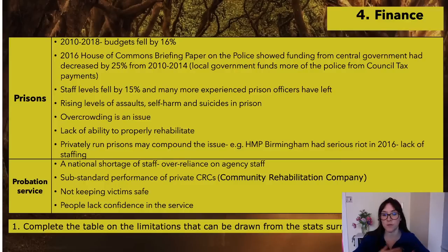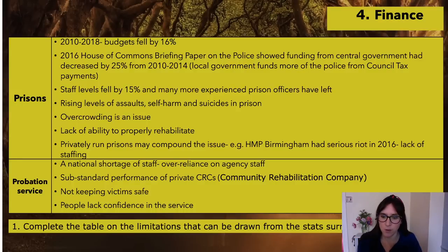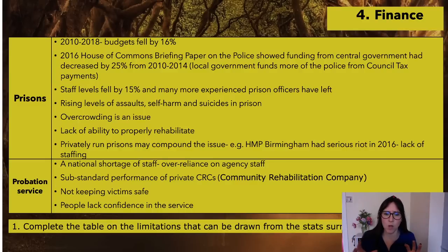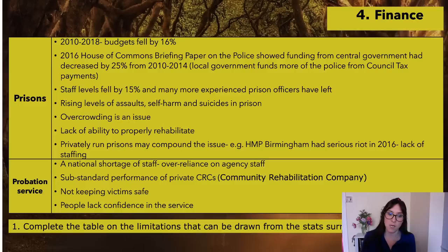Agency staff means a very high turnover of different staff — nobody stays with the same people, so there will always be a different person dealing with the case. Mistakes get made and people can't have a continuous relationship. If you're working with someone on probation, you want the same person working with you — not a different person every time. There's no continuity, things are overlooked, and agency staff won't necessarily have the same amount of training or experience as permanent staff.